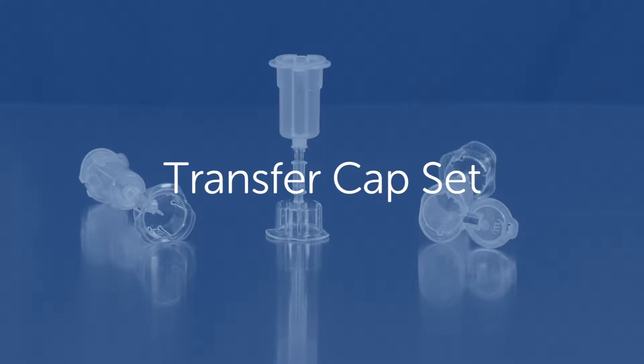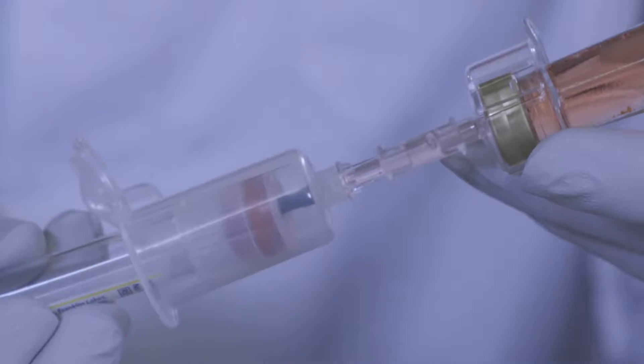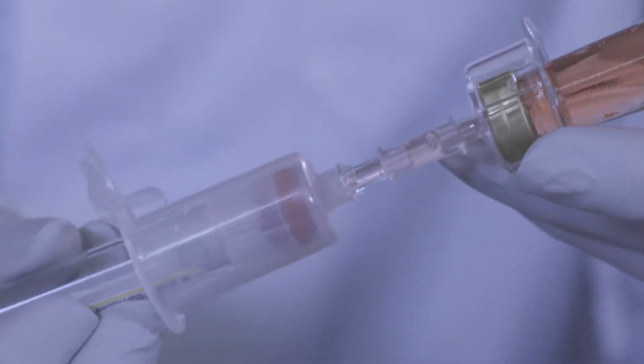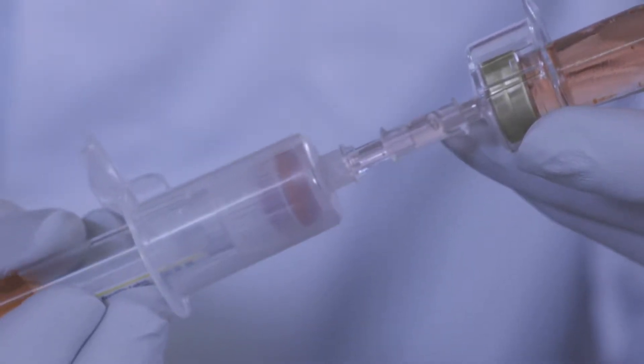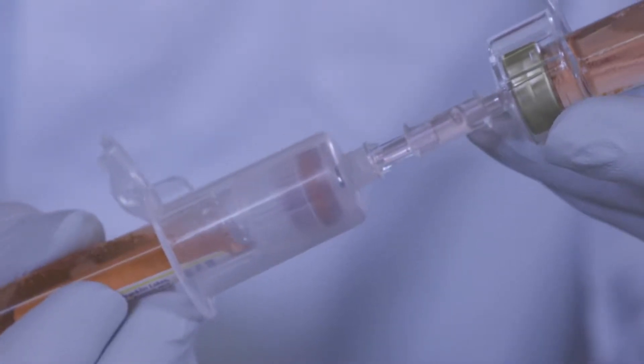The ITEL transfer capset is used to safely transfer sample directly from a blood culture bottle into a vacuum tube. The vacuum tubes obtained from this procedure are typically used in conjunction with automated blood culture streakers and other applications.